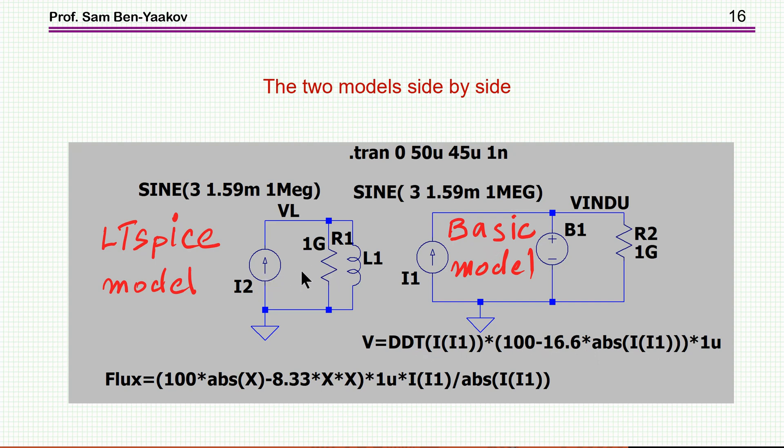And here, this is the LT Spice model. And now I've put this equation for the flux. What it is, is that first of all, I have this 100 times I. And this is the absolute value of the current. And then I squared. This is micro-Henry. And then I have the sign here. This is the sign. So this is the LT Spice model. This is the basic model. And now I'm running these two together.